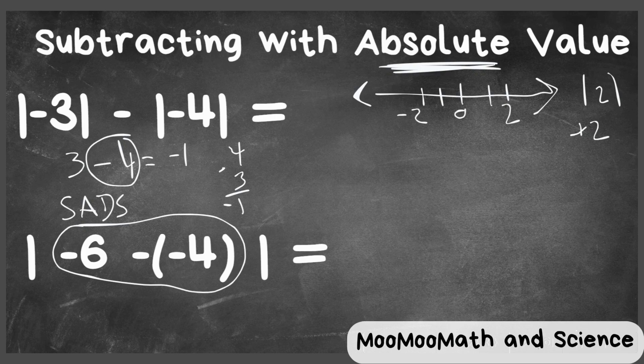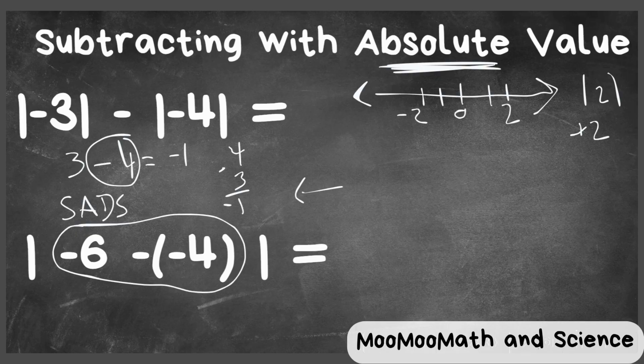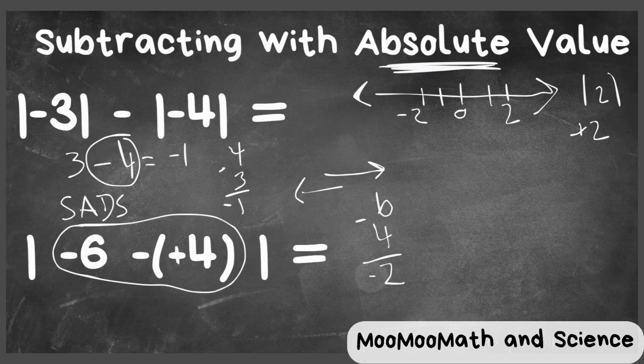Whenever you have a minus a negative, if you were on the number line and you were subtracting, you would go in this direction. But since it's a negative, you go in the opposite direction, so you're basically adding. So I'm going to change this to addition. Now we have different signs again. So I'm going to write six, and then I'm going to write the four. Different signs, so I'm going to subtract: six minus four is two. I'm going to take the sign of the larger number, that would be negative two.